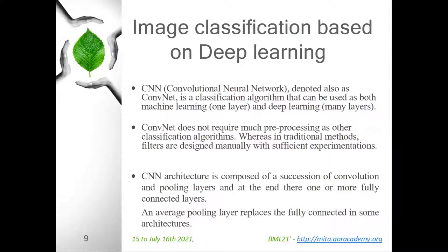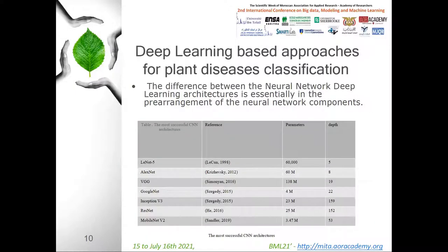Regarding deep learning architectures, CNN, also called ConvNet, is generally composed of a sequence of convolution layers, pooling layers (max, min pooling), and at the end one or more fully connected layers. The difference between deep learning architectures is essentially in the pre-arrangement of the neural network components. A large number of parameters have to be fixed for a given architecture, such as the number of layers, the number of neurons in each layer, the size of the filter masks, the weight of the neurons, and the activation function to be used.